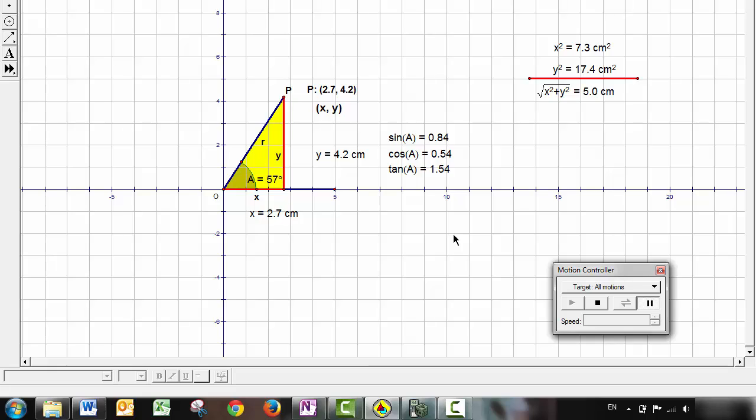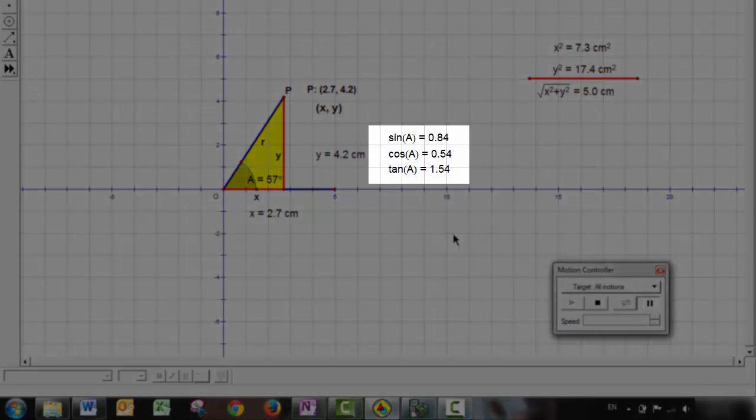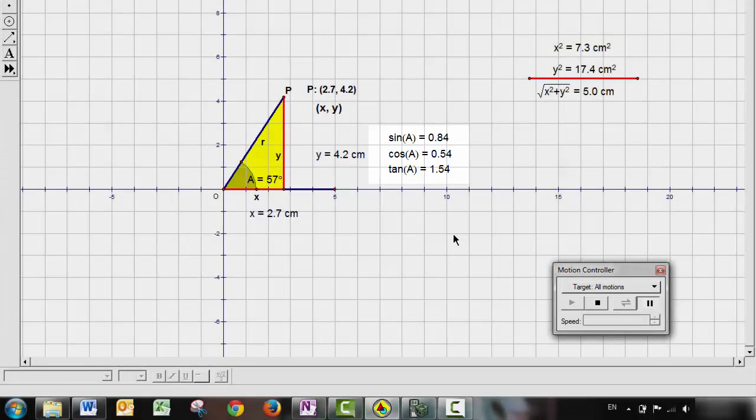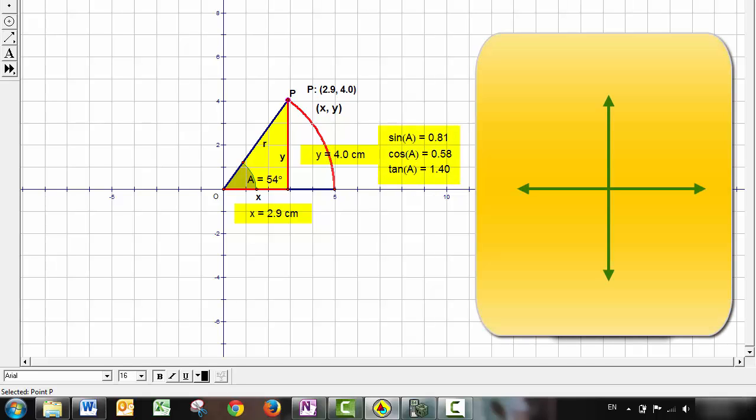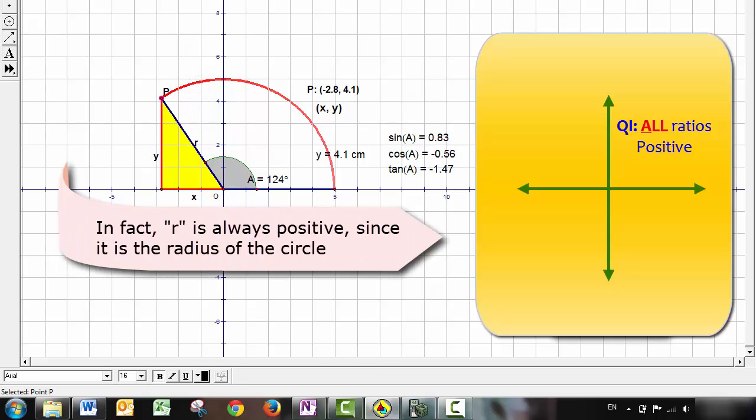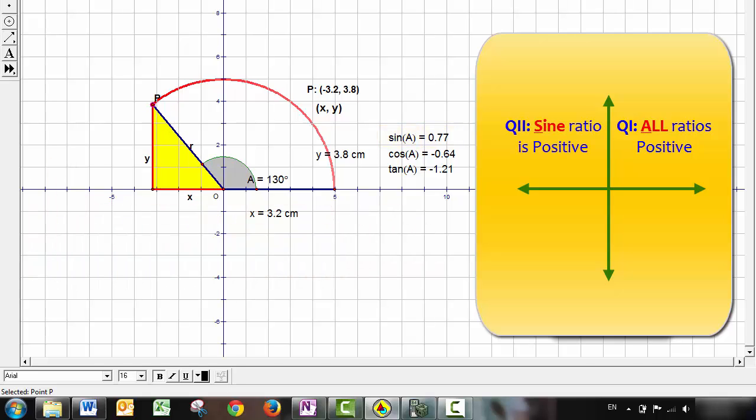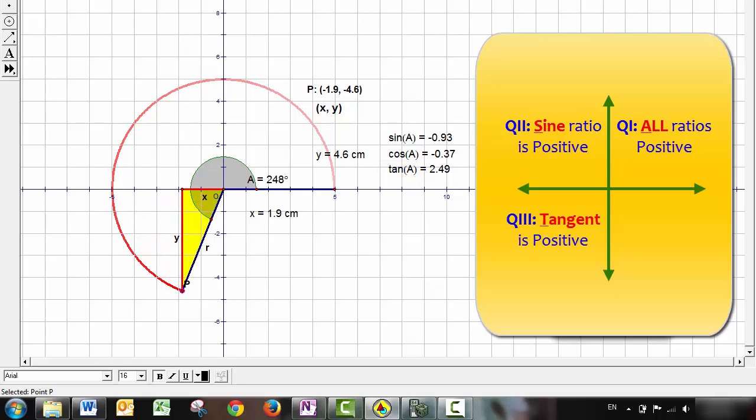We can also examine what happens to the values of sine, cosine, and tangent as the angle rotates through a full 360 degrees. In quadrant one, X, Y, and R are all positive, and as a result, all three trig ratios are positive. In quadrant two, X is negative, but Y and R are both positive. This means that the sine ratio is positive, while cos and tan are negative. In quadrant three, X and Y are now negative, meaning that sine and cos are negative, but tan is positive. And finally, in quadrant four, X is positive, Y is negative, and therefore sine and tan are negative, but the cosine is positive.